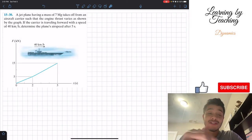Welcome back everyone to learning by teaching. Today we're in dynamics and we're going to solve problem 15.30. It says a jet plane having a mass of 7 megagrams takes off from an aircraft carrier such that the engine thrust varies as shown by the graph. If the carrier is traveling forward with a speed of 40 kilometers per hour, determine the plane's airspeed after 5 seconds.